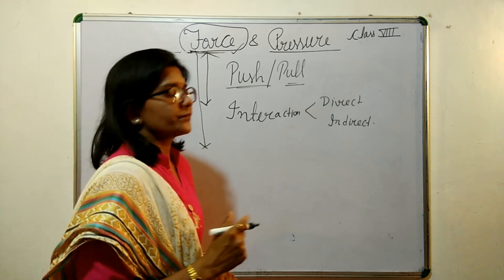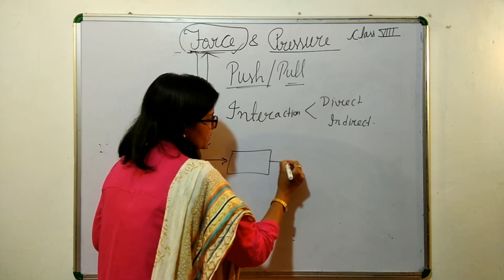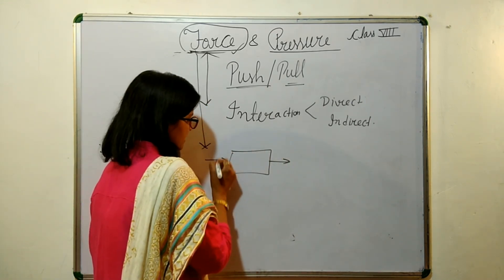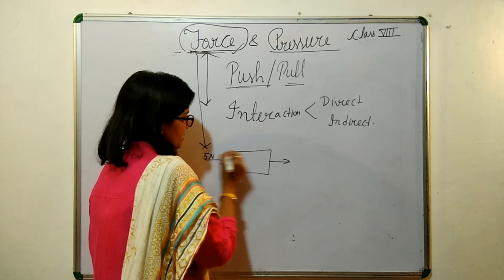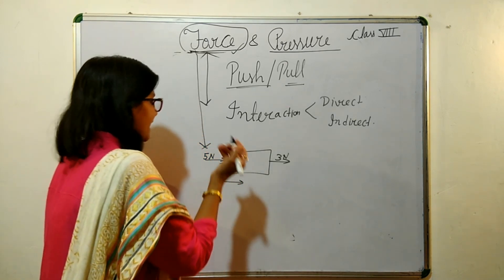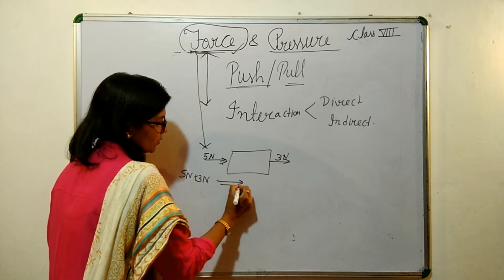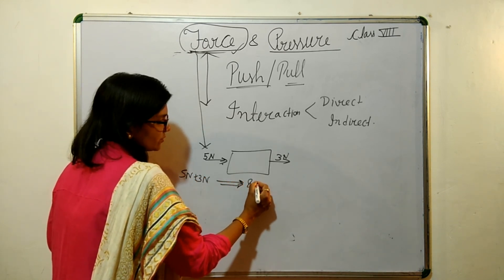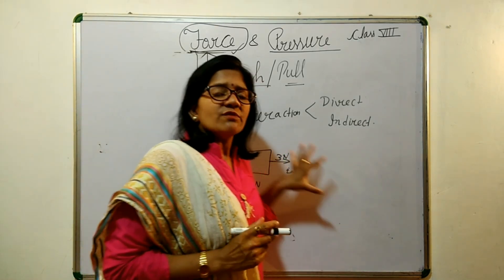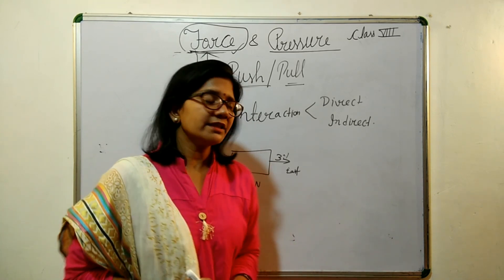If we apply force on an object in the same direction — suppose here it is 5 newton and here it is 3 newton — these forces are going to be added. So 5 newton plus 3 newton is equal to 8 newton force in the east direction. This shows that force is a quantity which has direction.